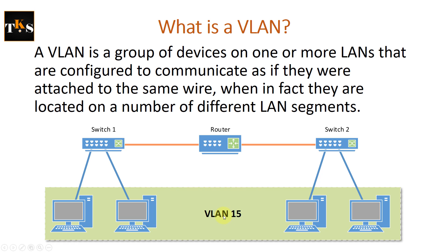So these computers are currently in VLAN 15. This VLAN number doesn't really mean anything at this point. This is how the network works — they are on the network physically, but they are in a group called a VLAN logically.